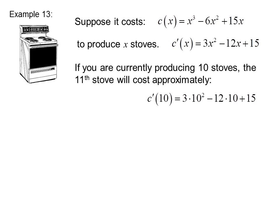If you are currently producing 10 stoves, the 11th stove will cost approximately C prime 10 equals 3 times 10 squared minus 12 times 10 plus 15. Or 300 minus 120 plus 15. Or $195. This is called the marginal cost.